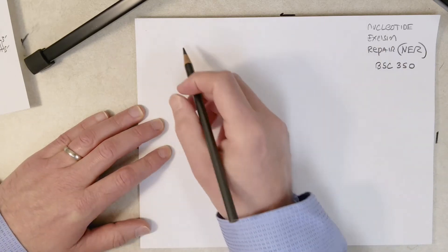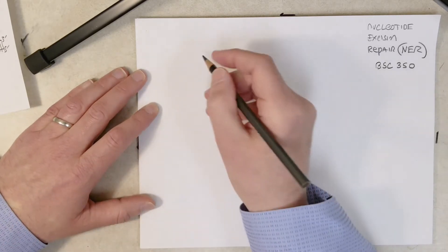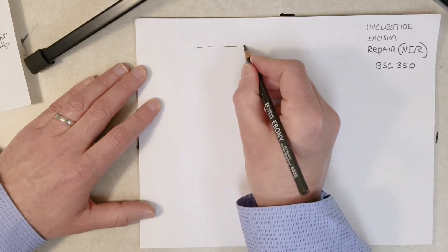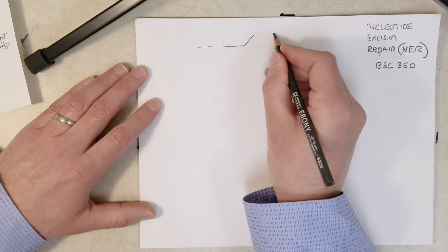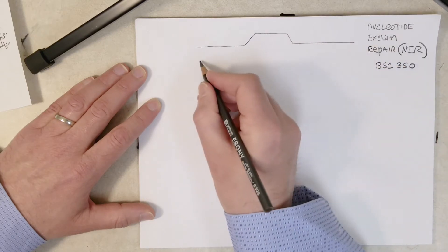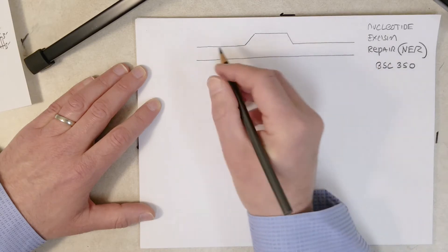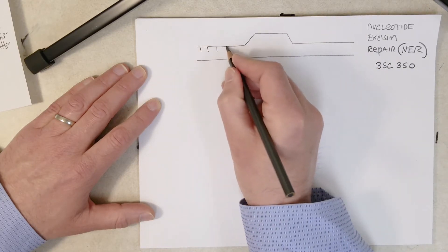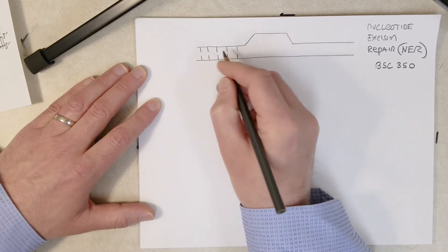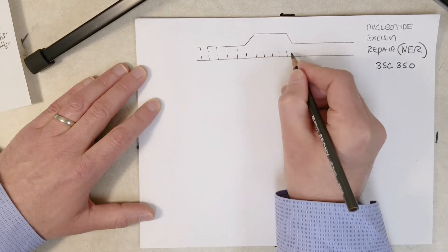So this video is a continuation from the last one on xeroderma pigmentosum and complementation groups. Essentially what happens is in all of us, not just individuals with the genetic disorder xeroderma pigmentosum, if we go out in the sun and we don't have a really good sunscreen on, the UV rays in sunlight cause damage in our epidermis and our skin cells.